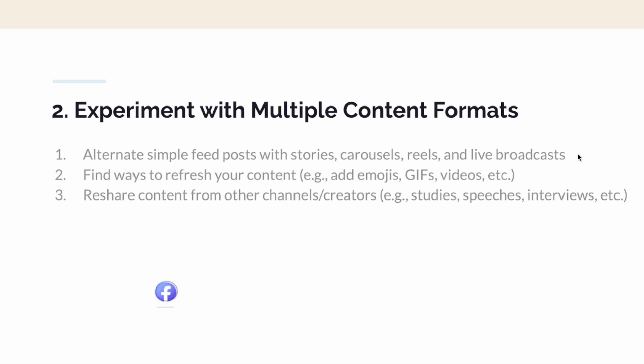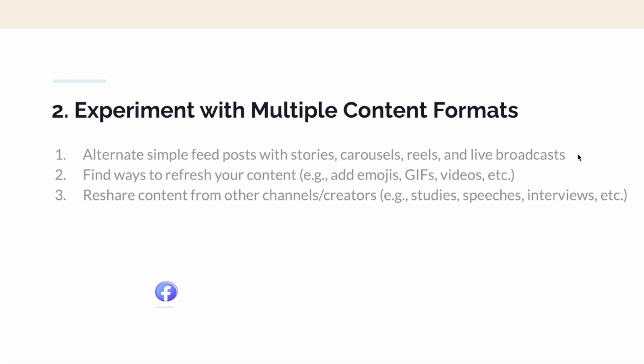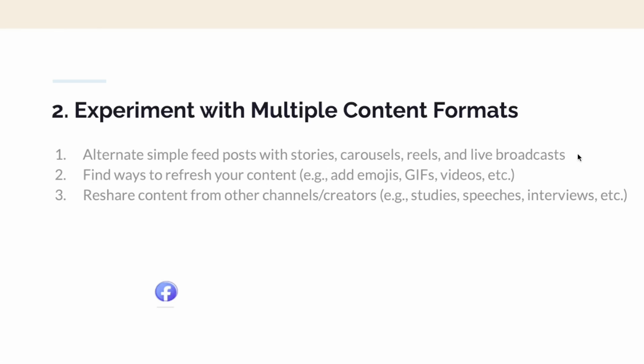You can also experiment with multiple content formats by alternating simple posts from stories to carousels to reels to live — just using all of the features, because that's how the algorithm will reward you. You can also find ways to refresh your content by adding emojis, making videos or clips, re-curating content, or re-sharing content from other channels or creators.